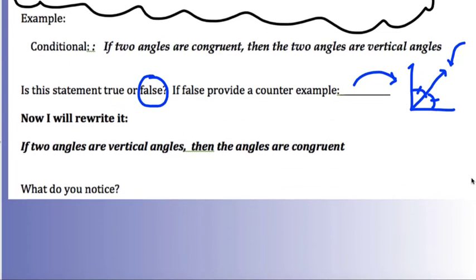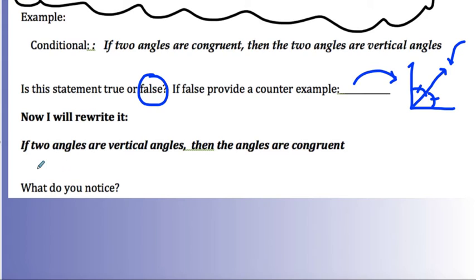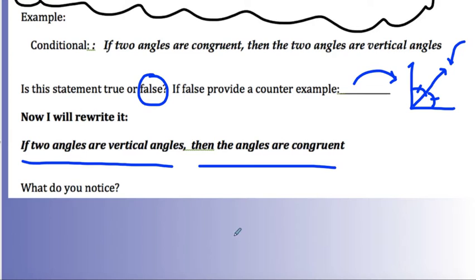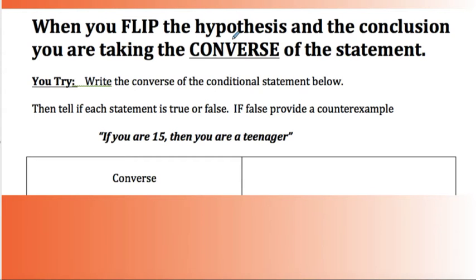Now I'm going to rewrite it: 'If two angles are vertical angles, then the angles are congruent.' Notice I flipped the hypothesis and the conclusion. When you do that, you're taking the converse of the statement. So when we flip p and q, we get the converse.